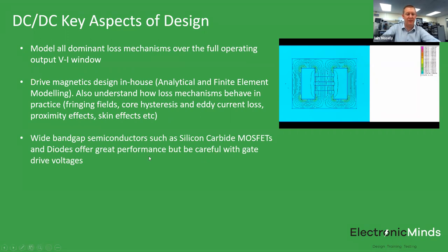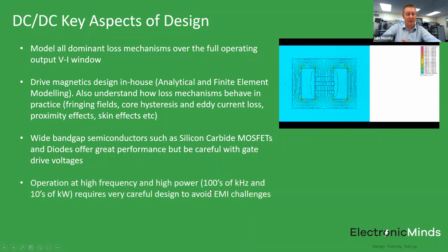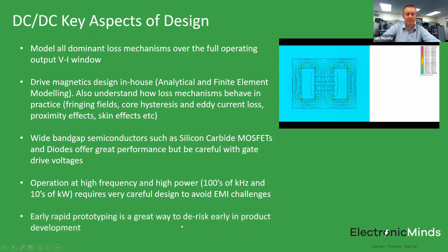Silicon carbide devices are fantastic but require care with gate drive voltages — they are not yet as robust as silicon devices, though they are in mainstream production. Operation at hundreds of kilohertz and tens of kilowatts requires careful layout and system design to avoid electromagnetic interference. A great way to de-risk all of these challenges early is rapid prototyping — getting something running on the bench as quickly as possible reveals major problems and allows focus on the key issues.